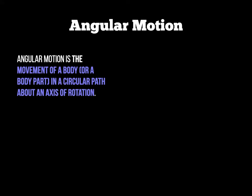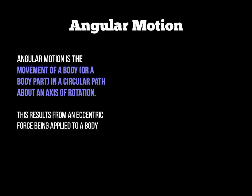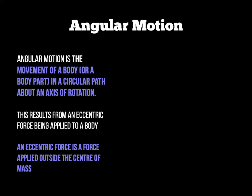The way we create angular motion is by applying an eccentric force to a body, and in particular we apply that eccentric force to the outside of a body. So if you imagine a tennis ball — if you apply a force, known as an eccentric force, to the outside of that ball, the ball will rotate or spin, and that is angular motion.